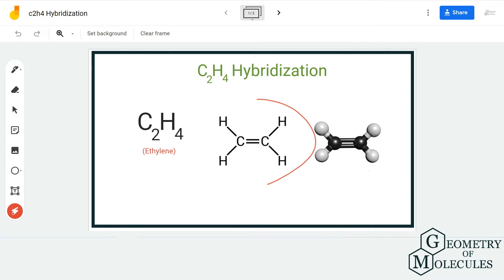If you look at this Lewis structure here, each carbon atom is forming bonds with three atoms: two hydrogen atoms and one carbon atom. It is forming a double bond with the carbon atom and two single bonds with two hydrogen atoms.